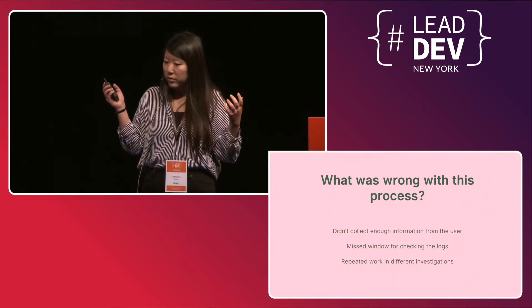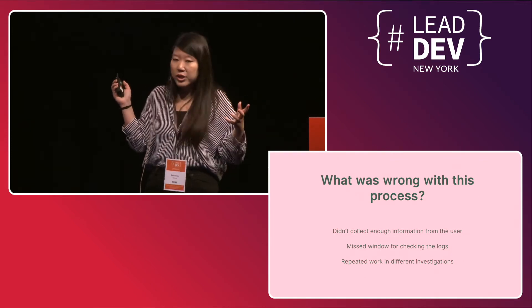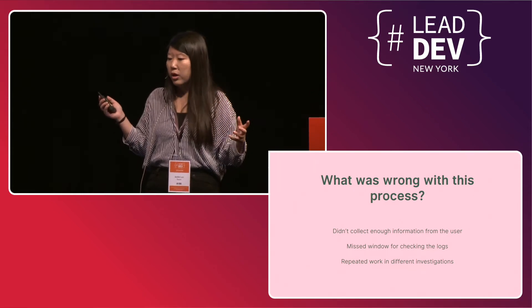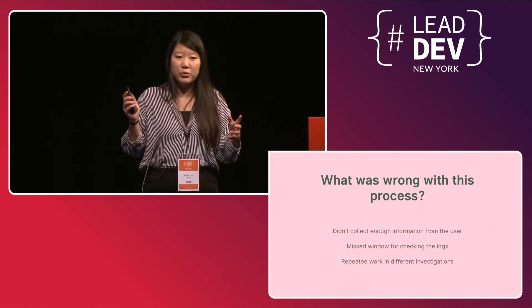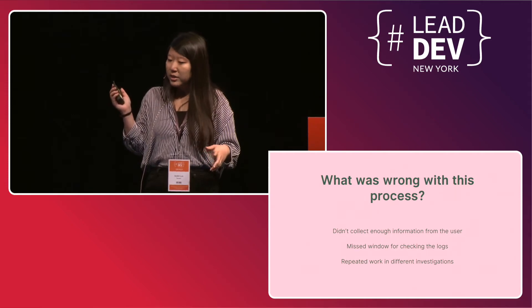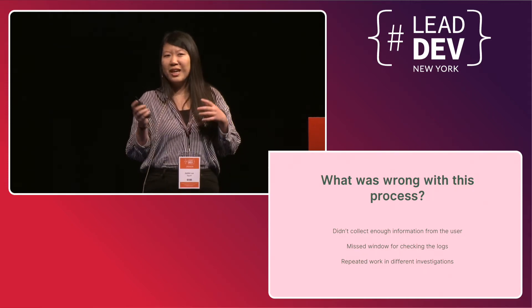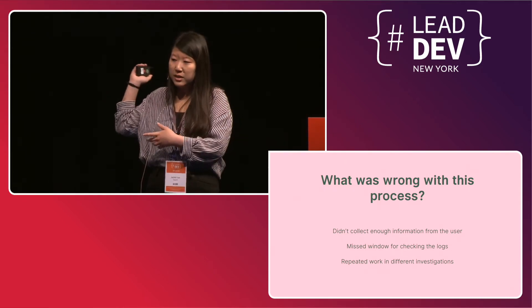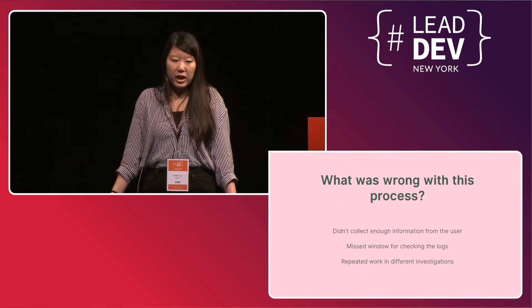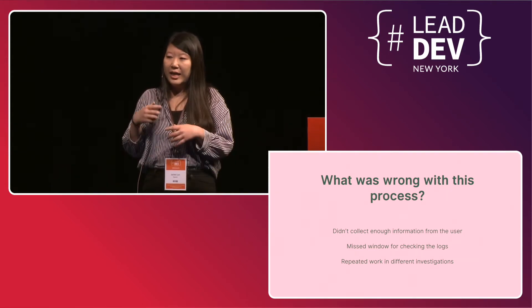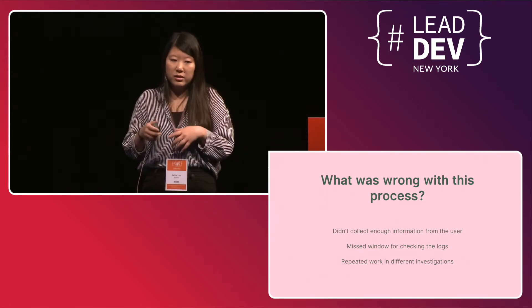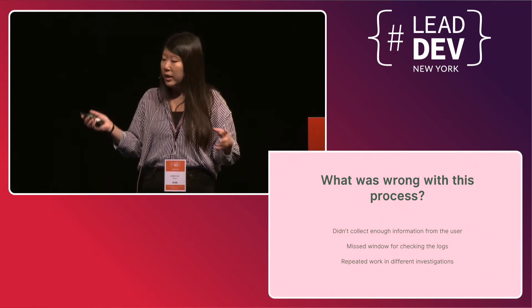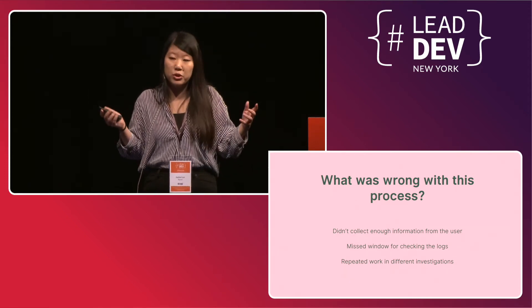The last problem, and in my opinion the biggest one, was that we repeated work between investigations. Another engineer had looked at the problem for three days — even if she didn't find a fix, she had tested several hypotheses and found out which were wrong. But I didn't have any of that information when I started. Later, when I raised this at an all-hands, we found out there was actually a third engineer who had never claimed the task, so she wasn't on the activity log. She had also looked into it for a couple of days without finding a root cause. In short, we weren't working collaboratively and weren't sharing the data we'd gathered because we just didn't think it would be useful.